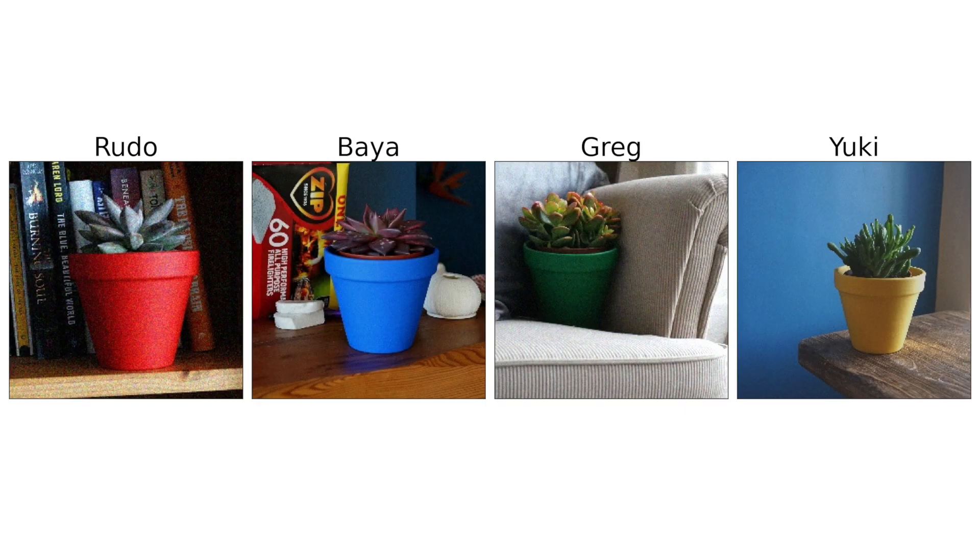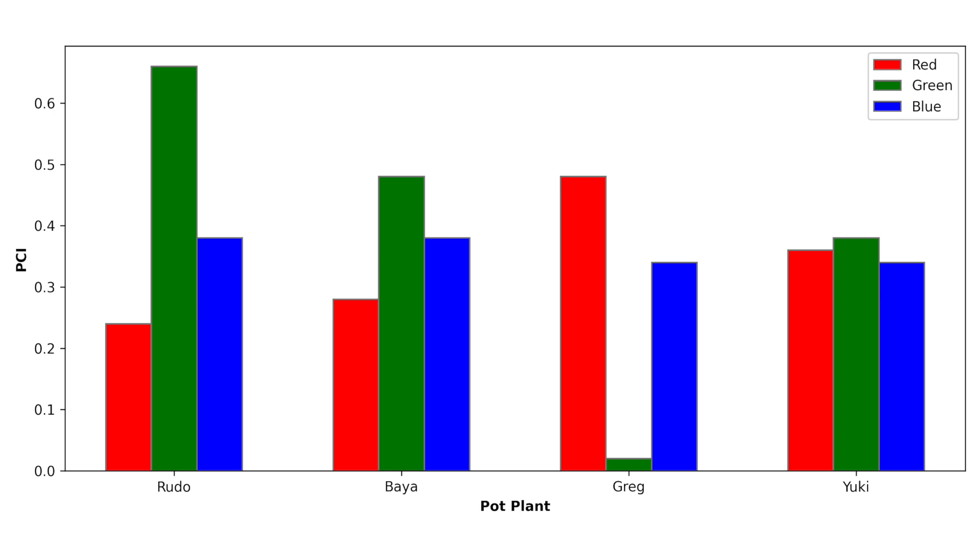PCI can really only tell us whether specific channels are important to a prediction, and the usefulness of this insight depends on your problem. Consider these instances from the pot plant dataset — an image classification problem where we try to predict the name of the pot plant. When we apply PCI to a model trained on this dataset, we get similar scores for each channel: specifically 35%, 39%, and 35% for the red, green, and blue channels. These give us the decrease in accuracy on the test set when each channel is permuted, telling us that all channels are being used by the model.